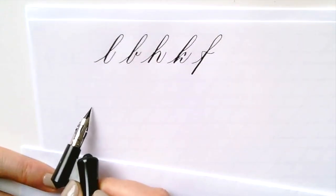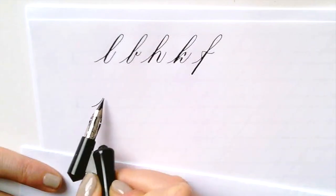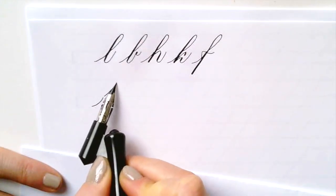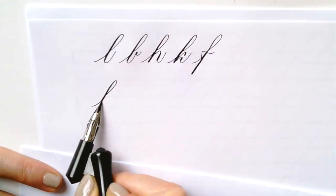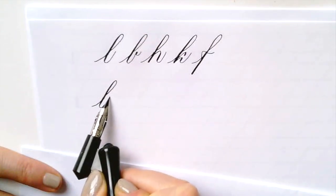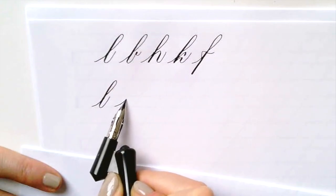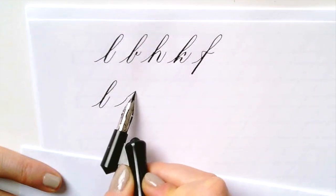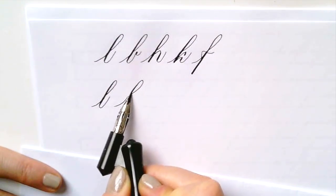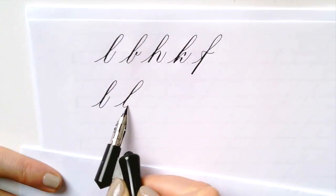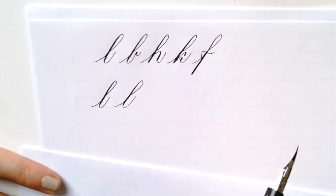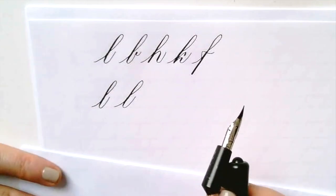The third group we're going to be practicing the overturn loops. Don't forget your in-stroke, start at the waistline, loop up and over and down along the slant and up again in a light hairline stroke. In-stroke, loop up and over, heavy down, release before you get to the base and come up in a light up-stroke.